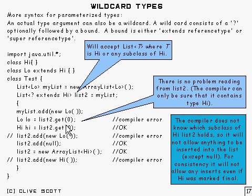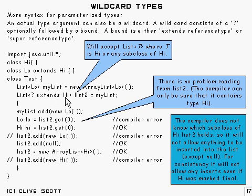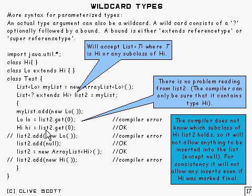Now if we try and get it back out using List2, you will get a compiler error. The reason is that List2 is declared as something which extends High, and the compiler doesn't know what type is actually in there — in the worst case it may be of type High. So you wouldn't be able to assign it to a Low variable. But you can get it out and set it to a High variable without any trouble.